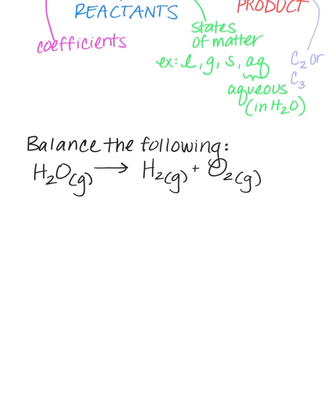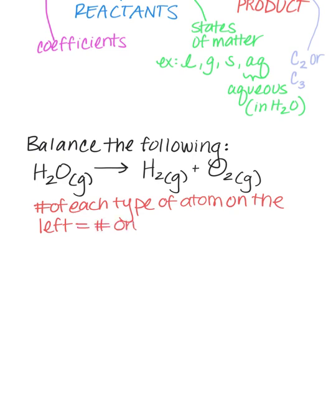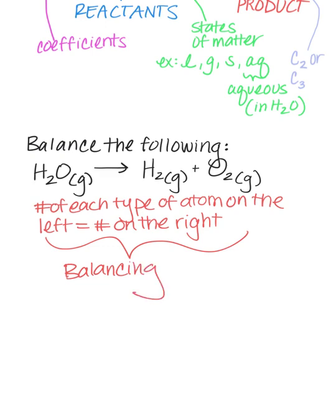I mean that the number of each type of atom on the left needs to equal the number on the right. The number of each atom on the right. So that is what is balancing an equation. This is balancing our chemical equation. Okay, so we're going to use that idea.